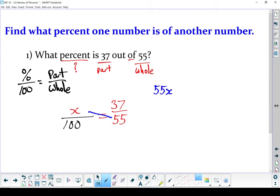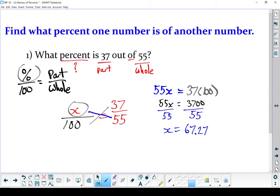55 times x and 37 times 100. We end up with 55x, 37 times 100 is 3,700. I'm going to divide both sides by 55, which means that x equals 67.27. Now I was solving for this part up here, the percent. So my answer should also have a percent on it. That would read as 37 is 67.27% of 55.